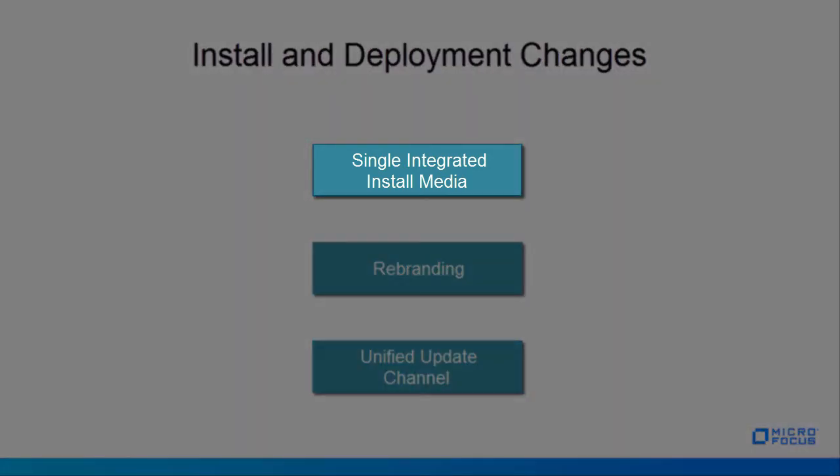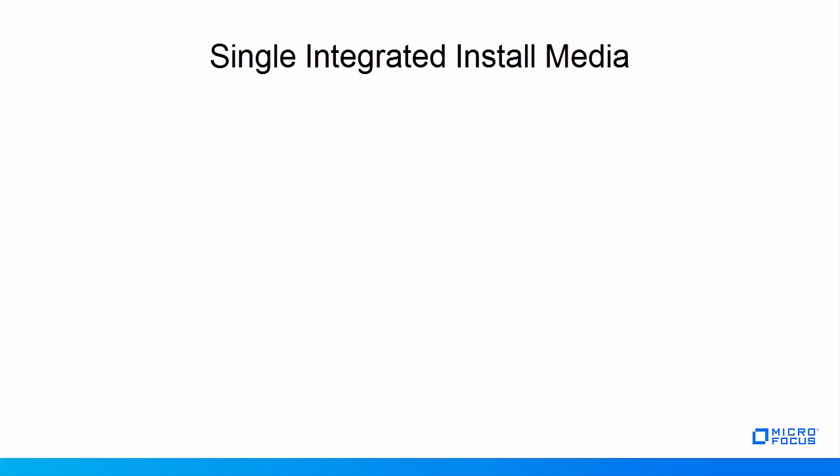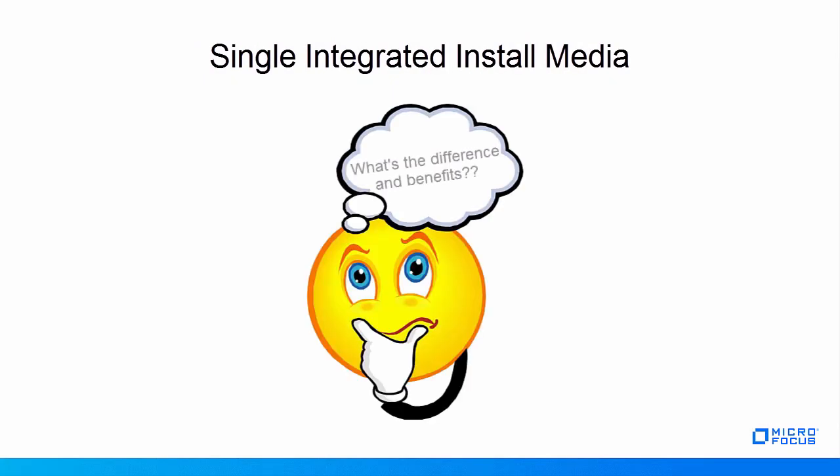Let's start with single integrated install media. You might be wondering what is the difference, because integrated install media was already available in previous OES releases, and in OES 2018 it's only single integrated install media. What is the benefit? Before we understand this, let's see how it was in previous OES releases.